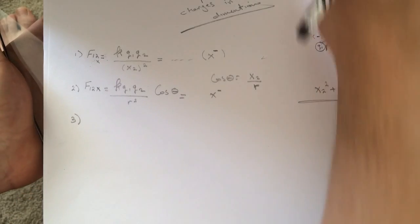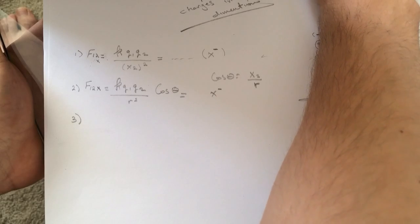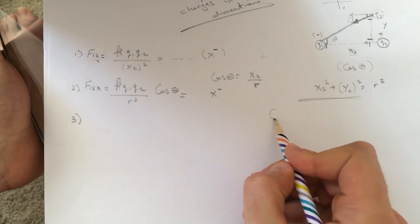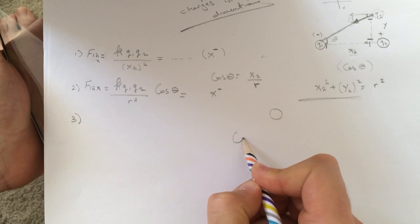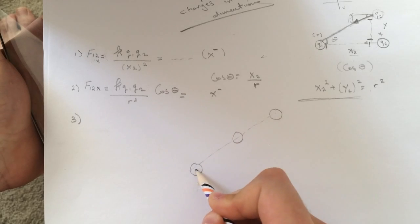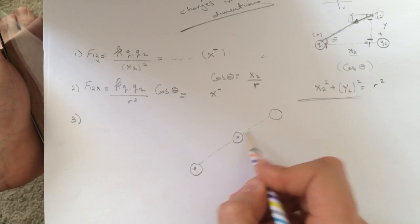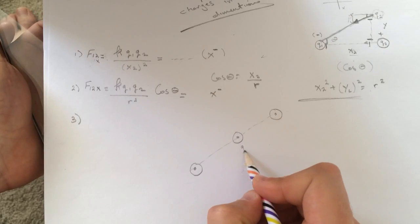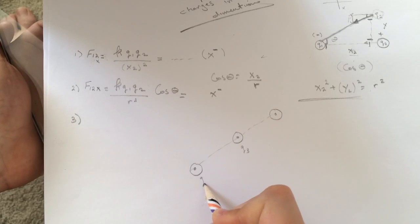Question number three. Let me look. They now they got... I'll draw this guy here again. So they got another charge in between. They called it q3.